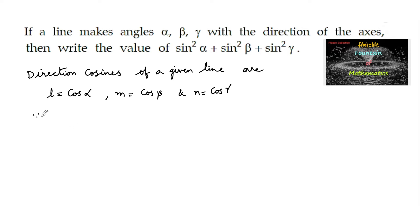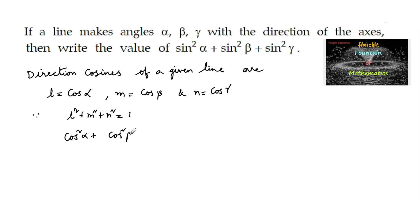Since we have l squared plus m squared plus n squared equals 1, we get cos squared alpha plus cos squared beta plus cos squared gamma equals 1.